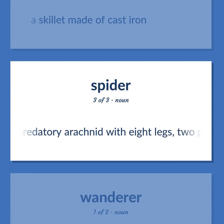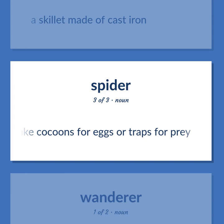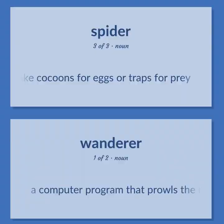Predatory arachnid with eight legs, two poison fangs, two feelers, and usually two silk spinning organs at the back end of the body. They spin silk to make cocoons for eggs or traps for prey.